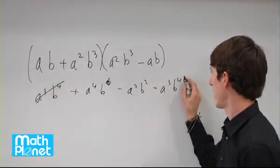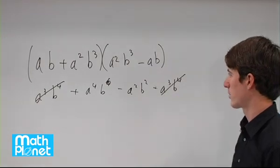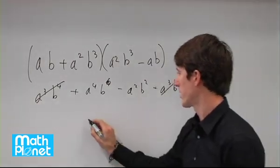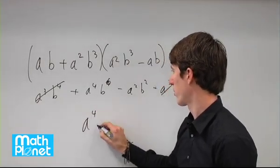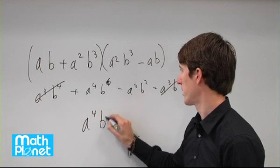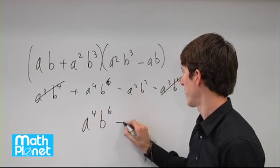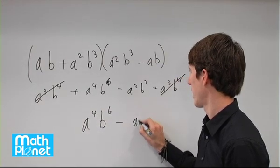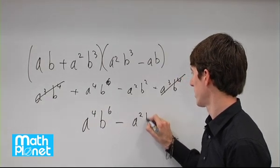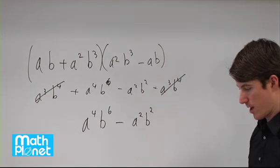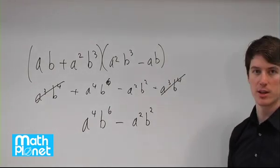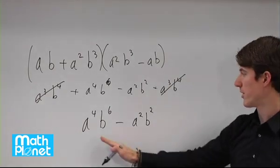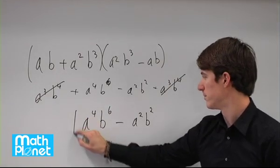This and this cancel directly. That just gives us a to the power of 4 times b to the power of 6 minus a squared times b squared. That's the same as option C, so this is our final answer: a to the power of 4 times b to the power of 6 minus a squared b squared.